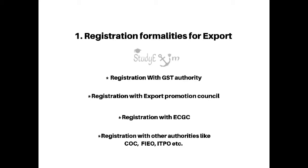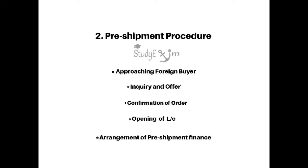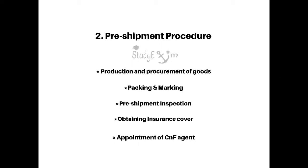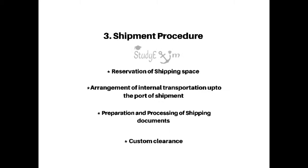Pre-shipment procedure includes approaching a foreign buyer, inquiry and offer, confirmation of order, opening of LC, arrangement of pre-shipment finance, production and procurement of goods, packing and marking, pre-shipment inspection, obtaining insurance cover, and appointment of C&F agent.